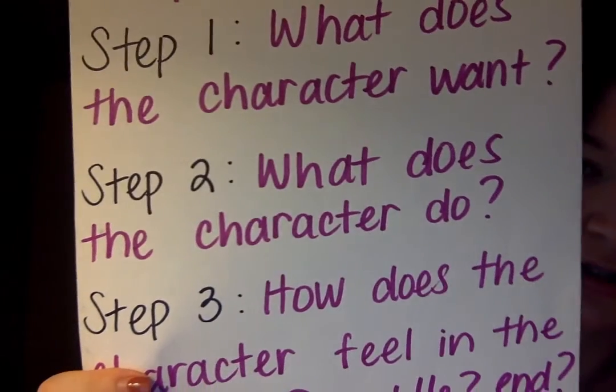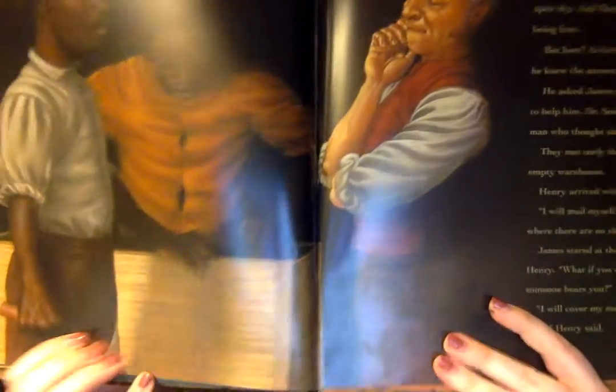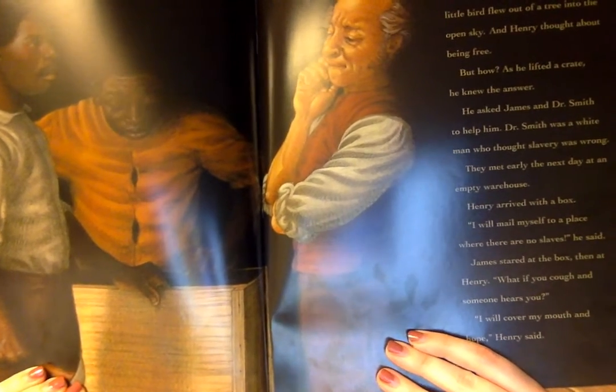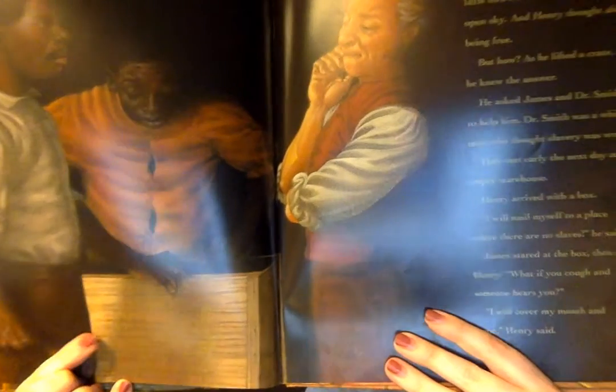Step two: what does the character do? What does Henry do to try to become free? We know he wants to be a free man and doesn't want to be a slave anymore. Looking at this picture, we can figure out that Henry decides to ship himself in a box — he sends himself in this box to Philadelphia. That's what he does to try to make sure he becomes a free man.